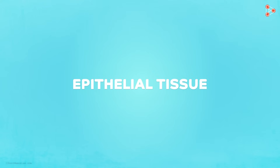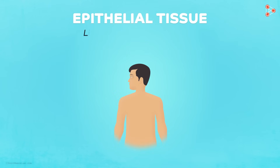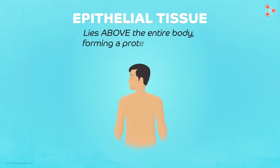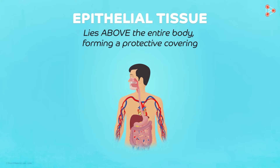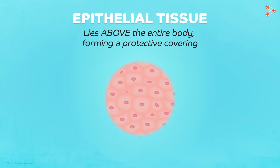As the name says, 'epi' means above — thus epithelial tissue is the one which lies above the entire body, forming a protective covering. Along with covering the body, it also forms a barrier between the various organs, separating them.